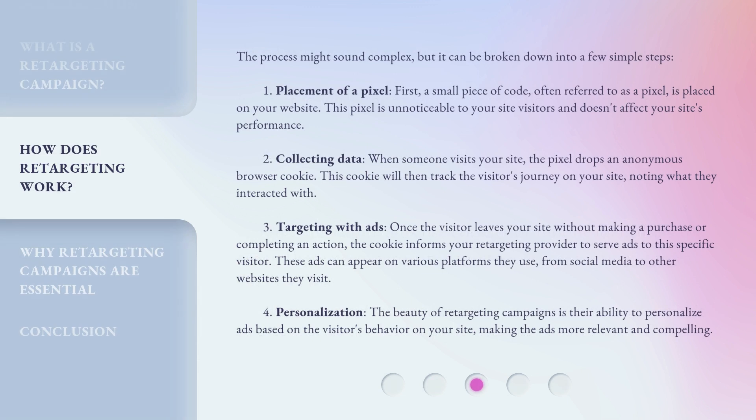The process might sound complex, but it can be broken down into a few simple steps. Step 1: Placement of a pixel. First, a small piece of code, often referred to as a pixel, is placed on your website. This pixel is unnoticeable to your site visitors and doesn't affect your site's performance.